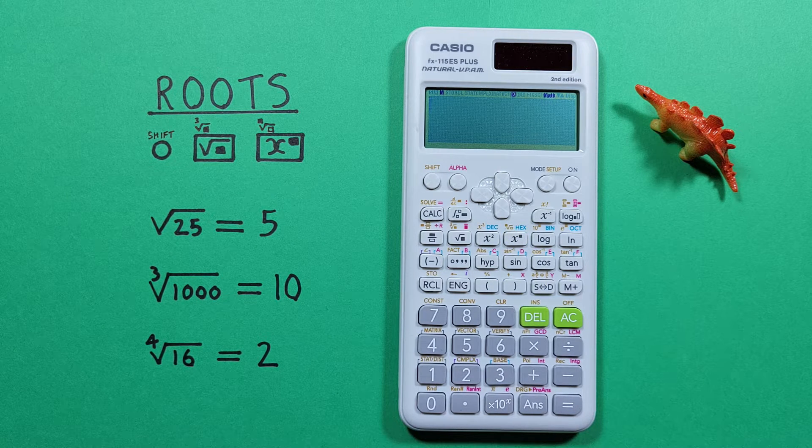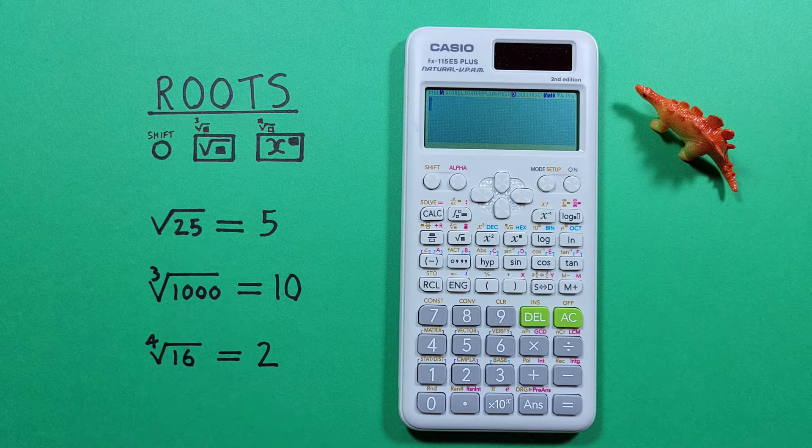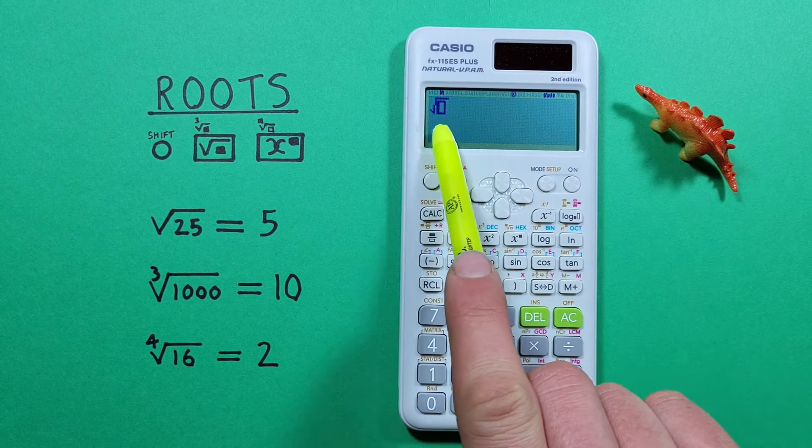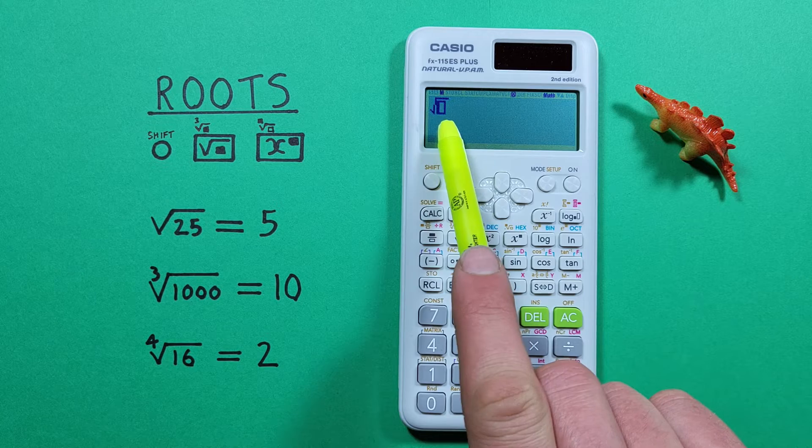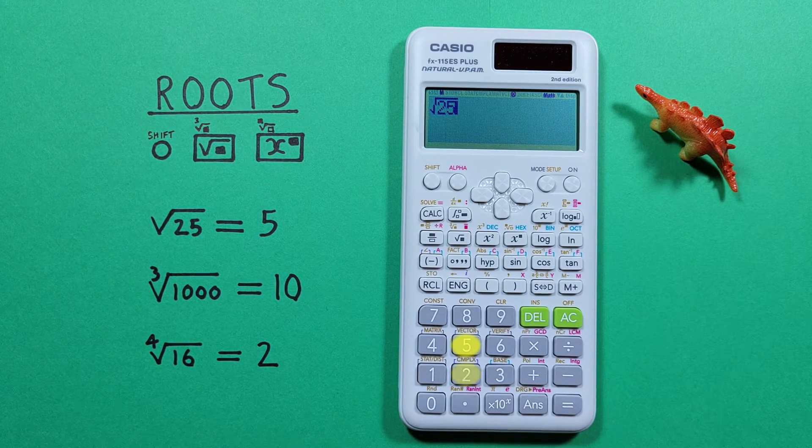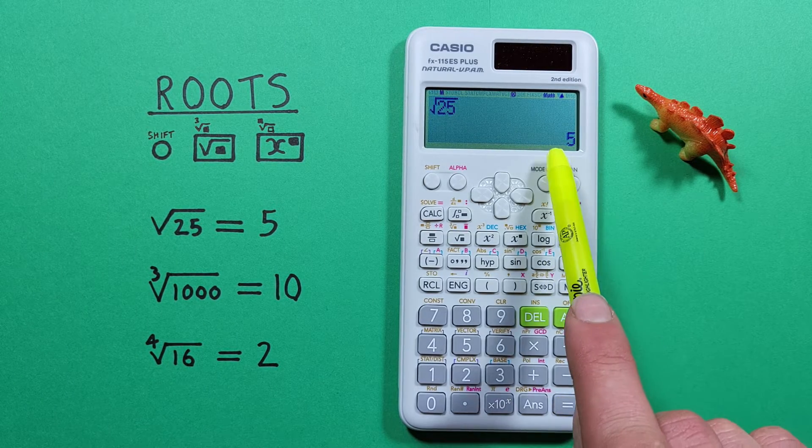If we want to find the square root of a number, like the square root of 25, we press the square root key and see the square root symbol appear on screen with a box underneath. Then we enter 25, press equals, and get a result of 5.